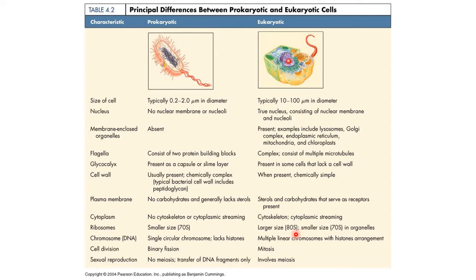Eukaryotic ribosomes are larger at 80S. The 'S' stands for Svedberg units. In prokaryotes, the smaller subunit is 30S and the larger subunit is 50S. In eukaryotes, the smaller subunit is 40S and the larger subunit is 60S. A separate video on the difference between prokaryotic and eukaryotic ribosomes is already uploaded on my channel — do check it out.